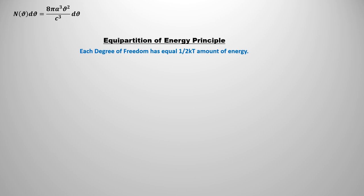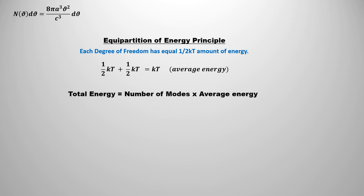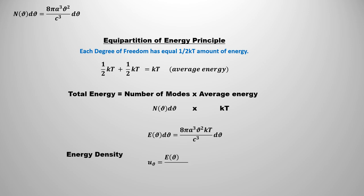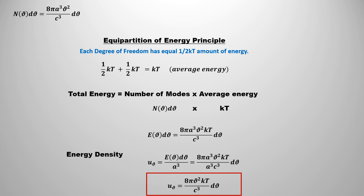Now let's find the average energy corresponding to each mode. Rayleigh-Jeans law used the equipartition of energy principle, which says that each degree of freedom has the same energy, (1/2)kT. If the system has both kinetic and potential energy, then the average energy corresponding to each mode will be kT. The total energy corresponding to the number of modes in the frequency range d·nu will be 8π·a³·nu²·kT / c³ times d·nu. Dividing by the volume of the cavity to get energy density gives 8π·nu²·kT / c³ times d·nu. This indicates that energy density is proportional to the square of the frequency. This is called Rayleigh-Jeans law.